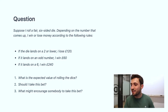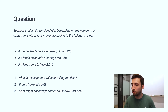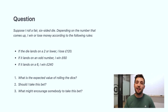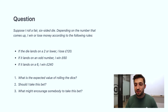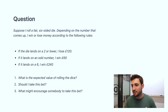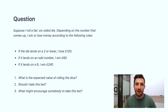Suppose I roll a fair six-sided die. Depending on the number that comes up I win or lose money according to the following rules: if the die lands on a two or lower I lose 120 pounds; if it lands on an odd number I win 60 pounds; and if it lands on a six I win 240 pounds. Our questions are: one, what is the expected value of rolling this die? Two, should I take this bet? And three, what might encourage somebody to take this bet?